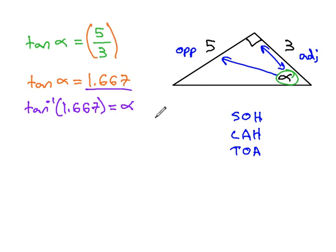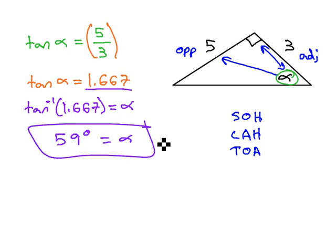And when we calculate the inverse tangent, we end up with, after rounding, about 59 degrees is equal to our alpha, that missing angle.